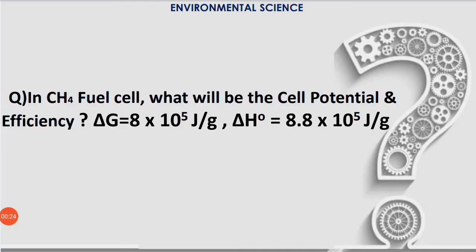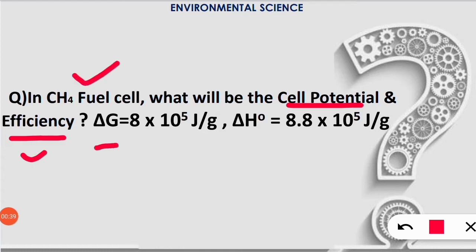The first question is a numerical problem on your screen. In a methane fuel cell, what will be the cell potential and efficiency? The given values are: ΔG = 8 × 10^5 J/g (Gibbs energy) and ΔH° = 8.8 × 10^5 J/g (change in enthalpy). Let's see how to solve this kind of question.